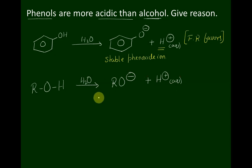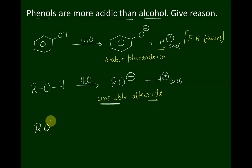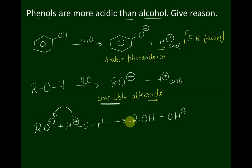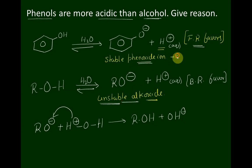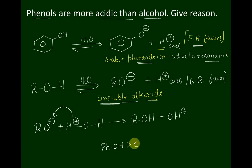Because the alkoxide ion is highly unstable, it readily accepts the proton from water to reform alcohol — so the backward reaction is favored. In the case of phenol, forward reaction is favored because phenoxide ion is stable due to resonance. Hence, phenols are more acidic than alcohols. The acidity order is: carboxylic acids > carbonic acid > phenols > water > alcohols (except methanol).